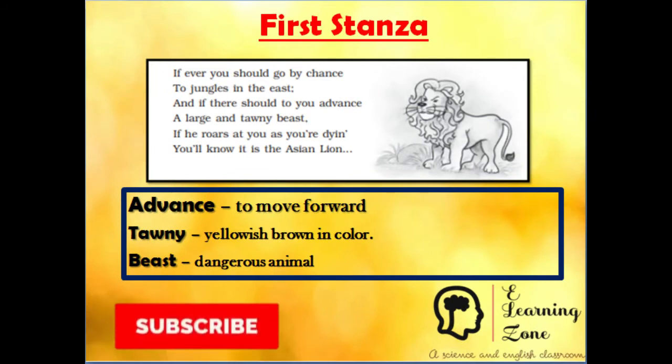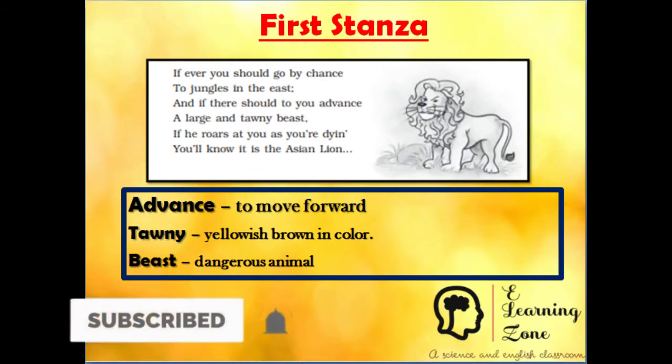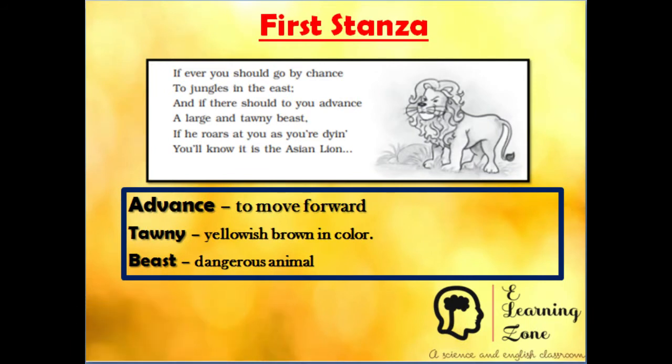Let me read stanza one: 'If ever you should go by chance to jungles in the east, and if there should to your advance a large and tawny beast, if he roars at you as you're dying, you'll know it is the Asian Lion.' Here the poet tells us how to identify and recognize the Asian Lion as you go into the jungles of eastern countries.